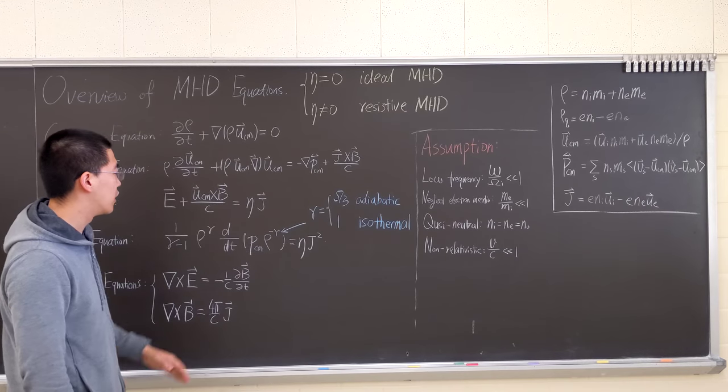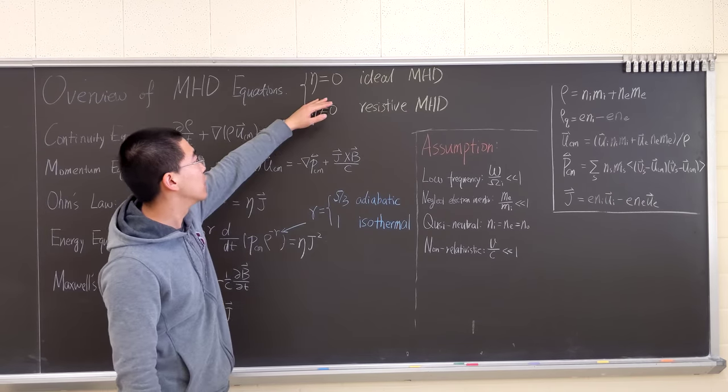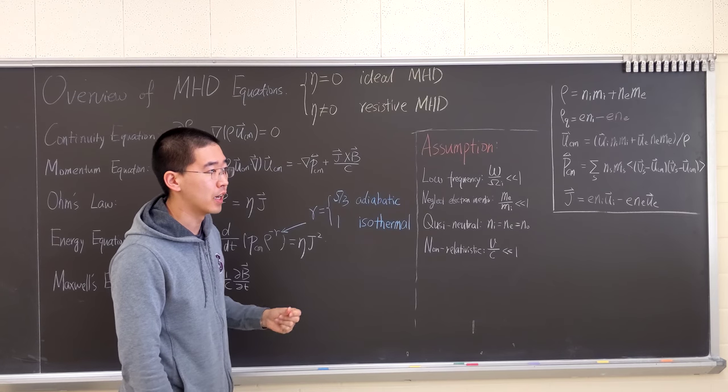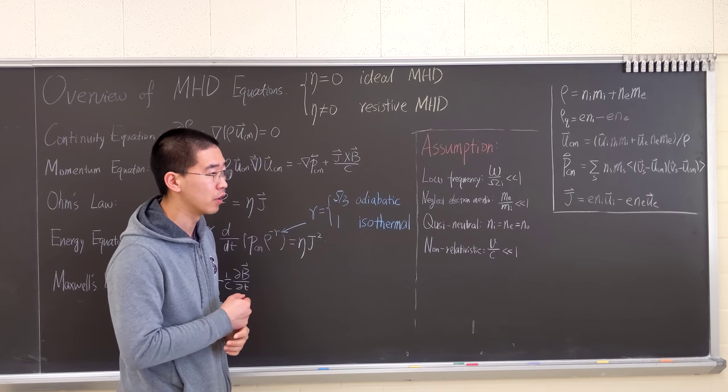And the eta here is resistivity. For eta equals zero, we're dealing with ideal MHD. This is perfectly conductive—it's a perfectly conductive plasma.